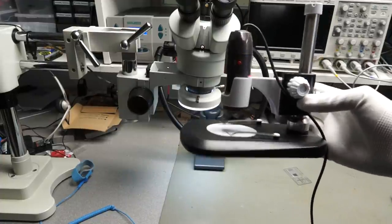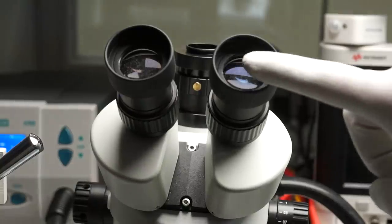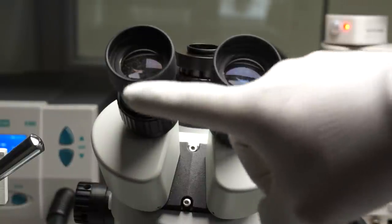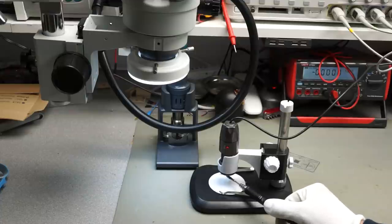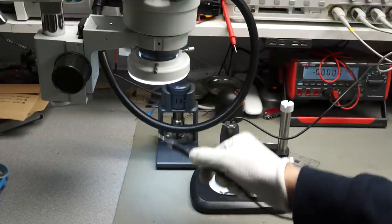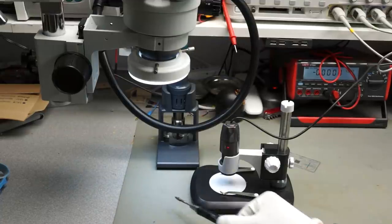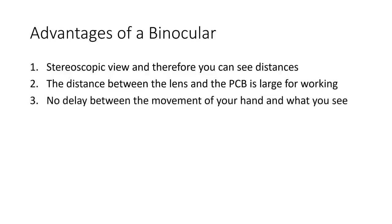Why that? Four reasons. First, you have no stereoscopic view and therefore do not see distances. Second, the distance between the lens and the PCB is very small for working. Third, all these microscopes have a smaller or longer delay between the movement of your hand and what you see on the screen. And fourth, because you look at the screen, you do not look in the direction of your hands. This needs some training for your brain to deal with that.